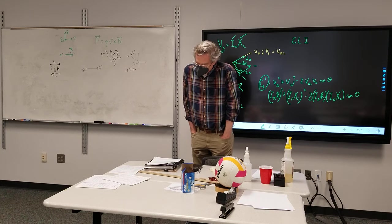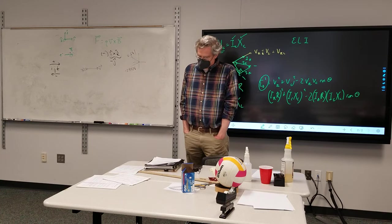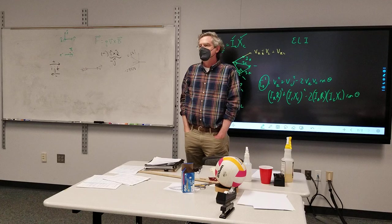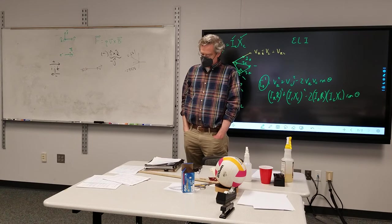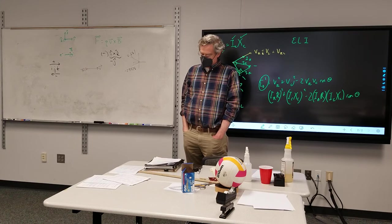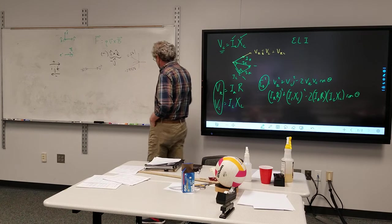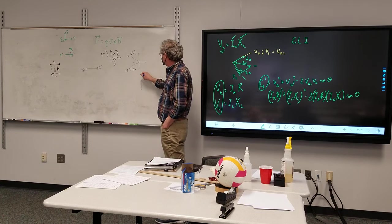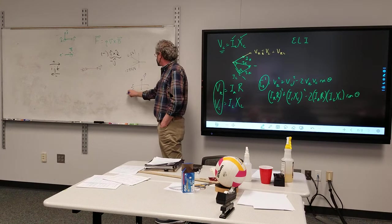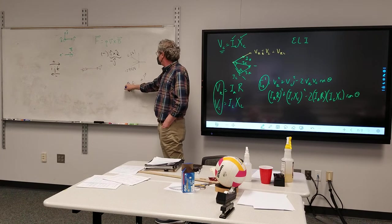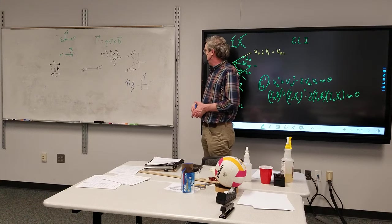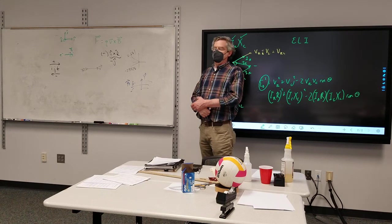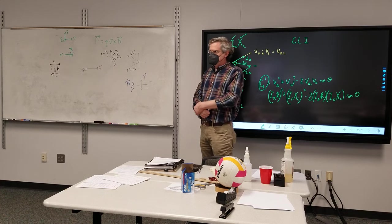All right, the next one. Proton traveling in the J direction into a B field in the negative I direction. So a proton in J, B in negative I. So a proton is moving this way, B field is this way. So same thing, right? Not same thing, but same methods. Oh yeah. And you pick one that you like. That works for you.